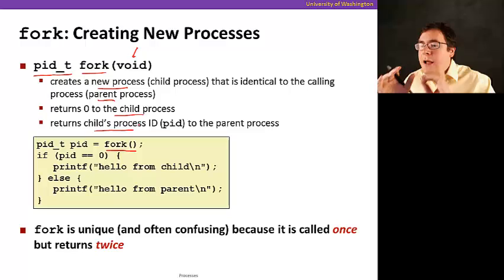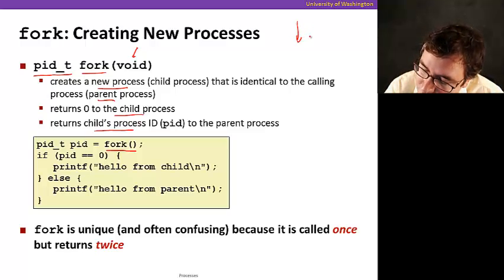I know this might be getting a little confusing because it kind of is, and the reason is that fork is unique because it's called once but it returns twice. Because when you have a process running, you call fork.